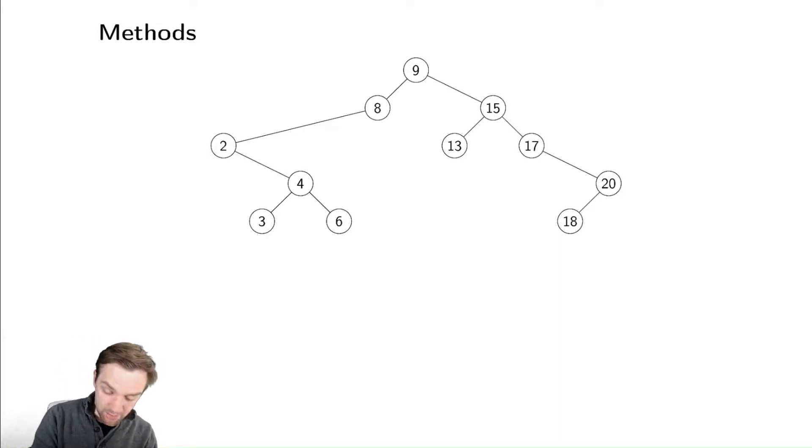Therefore, the minimum value is always the leftmost node, and conversely, the maximum value must always be the rightmost node. So those should be some relatively easy methods. Let's see how we implement those.